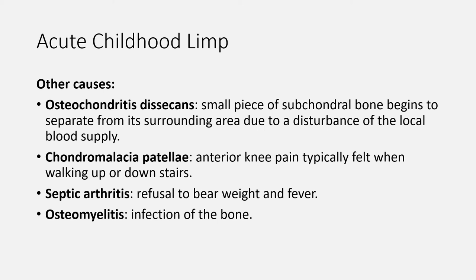Another cause of acute childhood limp is chondromalacia patellae — anterior knee pain typically felt when walking up or downstairs, affecting children between the ages of 10 to 19 years. Another cause is septic arthritis, an infection of the synovium and joint space that can present in any joint but most commonly affects the lower limbs. Clinical features include refusal to bear weight and fever. Another cause is osteomyelitis — an infection of the bone that usually involves a single bone but may rarely affect multiple sites. The most common presenting signs are pain with palpation and decreased limb use.